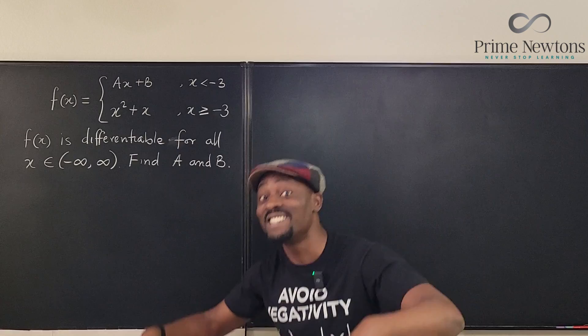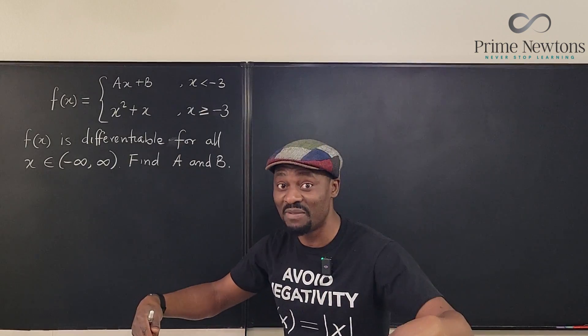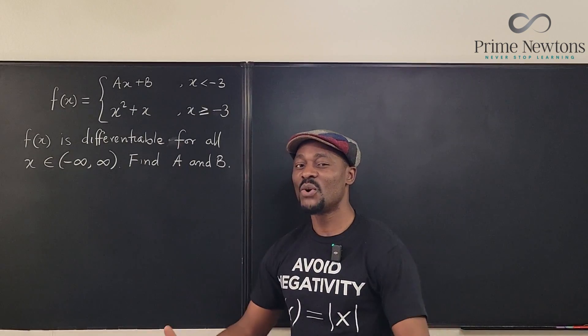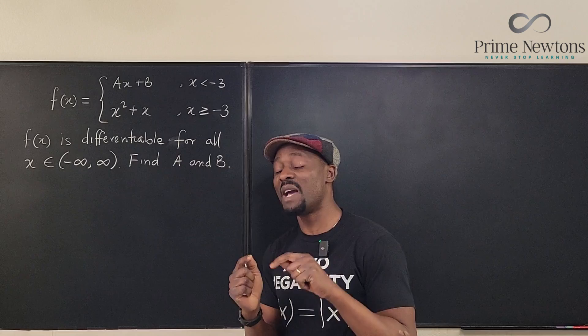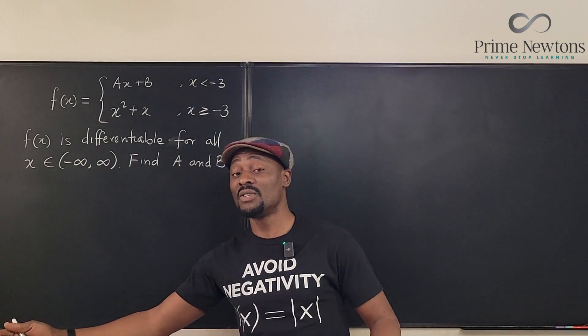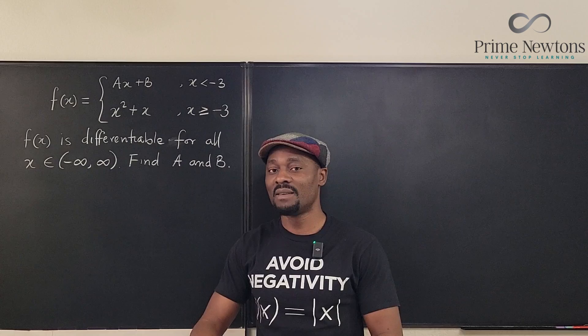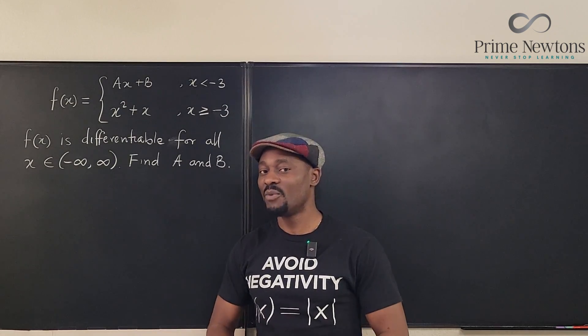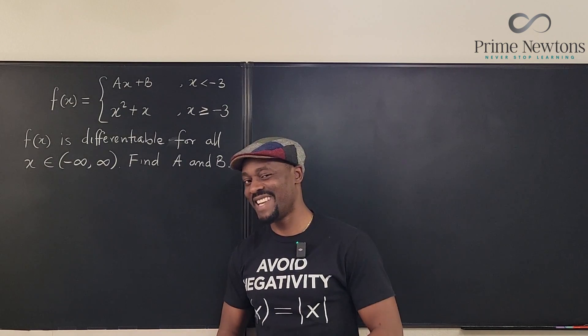Well, the function is defined at the point, and not just defined, the limit also exists. And what do you mean by the limit exists? It means the limit from the left is equal to the right. All of that put together will give us the answer. Let's get into the video.